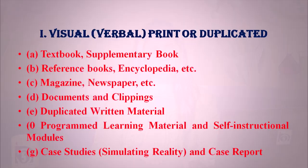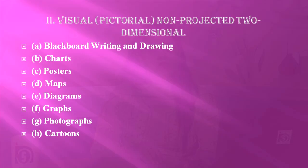The first type, visual print or duplicated, includes textbooks, supplementary books, reference books, encyclopedias, magazines, newspapers, documents, clippings, duplicated written material, programmed learning material, self-instructed modules, case studies and case reports. The second category, visual pictorial non-projected two-dimensional, includes blackboard writing and drawing, charts, posters, maps, diagrams, graphs, photographs and cartoons.